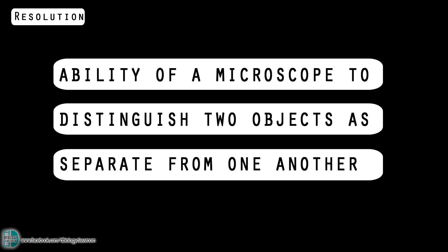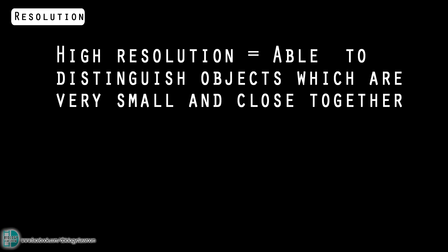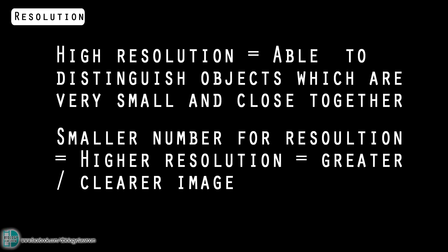Resolution is the ability of a microscope to distinguish two objects as separate from one another. The smaller and closer together the objects that can be distinguished, the higher the resolution is. So if a microscope has a really small number for its resolution, it means it can distinguish objects that are really close together. So it is a better microscope that can provide a clearer image.